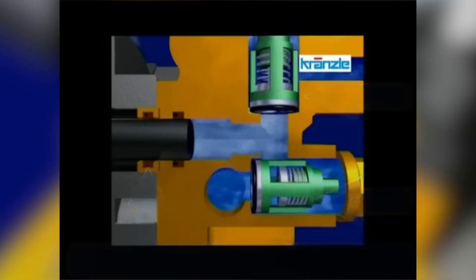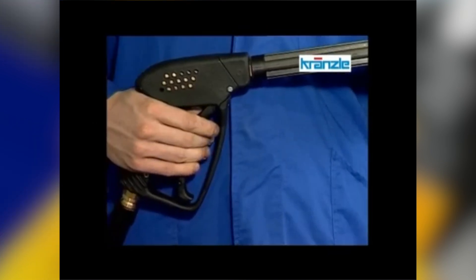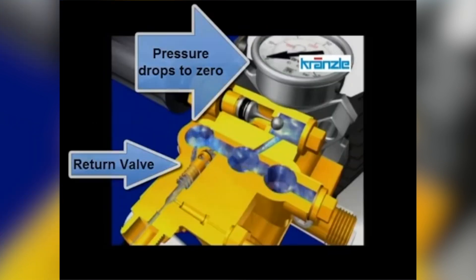These pumps are used in a lot of pressure washers that are below 2,500 psi and have low flow rates of less than 2 gallons per minute.